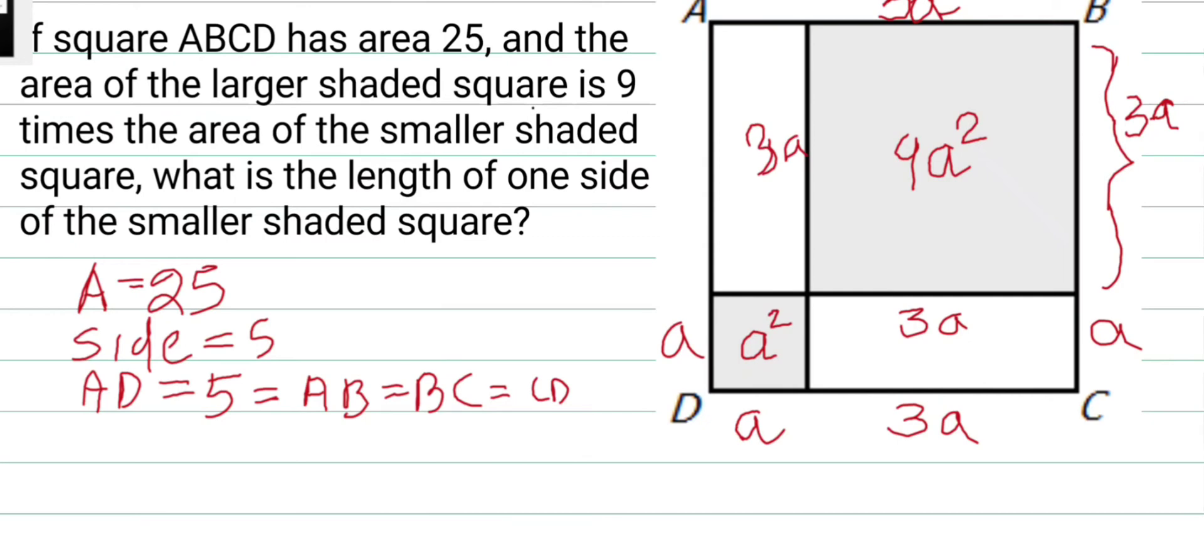side, if you consider DC equals 4a, which equals 5, that means the side a must be 5/4, and that is our answer.